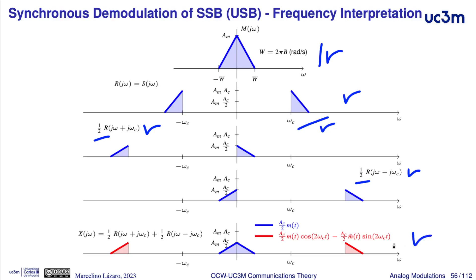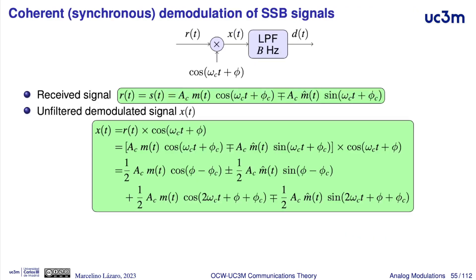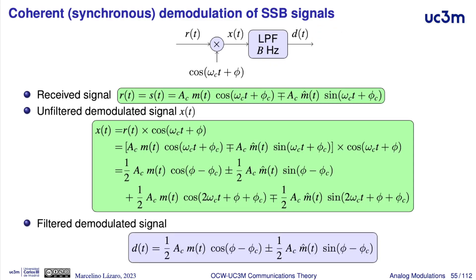The addition of these two replicas is what we have after the product with the cosine. The filter will remove the components associated with another single sideband modulated signal — in this example upper sideband — but with a carrier frequency of two times the original carrier frequency. Therefore, this low-pass filter removes the components located at two times the carrier frequency, corresponding to the cosine and sine terms at that frequency, leaving only the baseband terms.